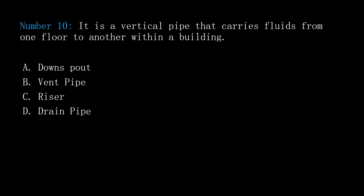Number 10. It is a vertical pipe that carries fluids from one floor to another within a building. A: downspout. B: vent pipe. C: riser. D: drain pipe. Answer: C, riser.